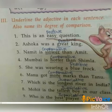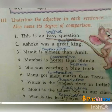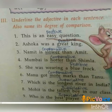Then Roman 3rd — underline the adjective in each sentence and name its degree of comparison. First one: This is an easy question. Easy — positive. Second one: Ashoka was a great king. Great — positive. Third one: Namit is slower than Amit. Slower — comparative.